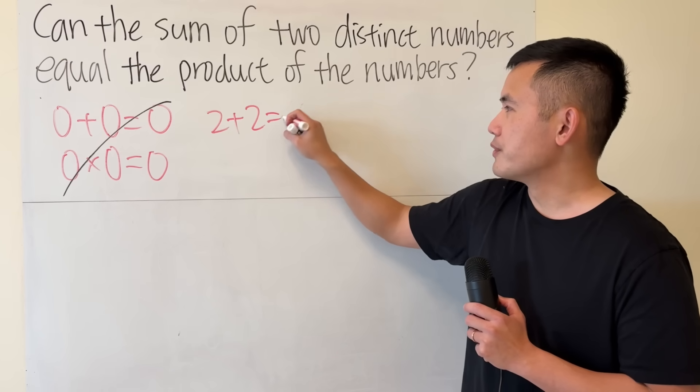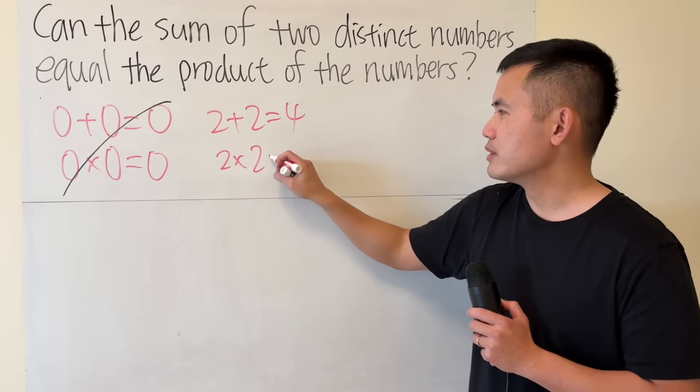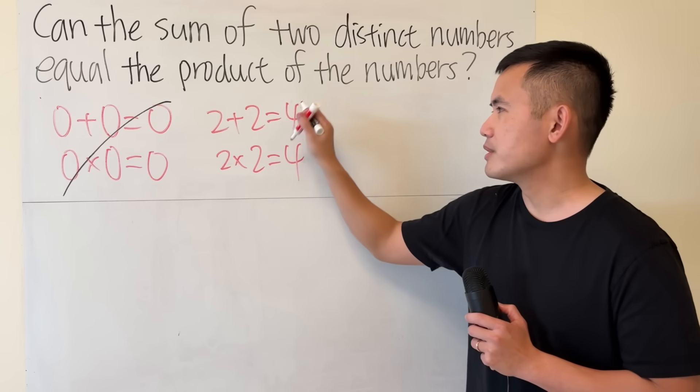Also, 2 plus 2 is 4, and 2 times 2 is also 4. But again, 2 and 2 are the same, so nah.